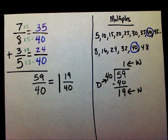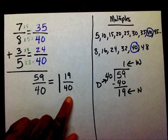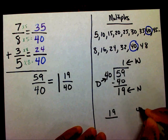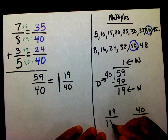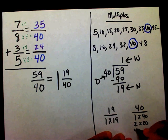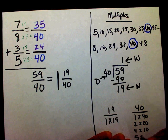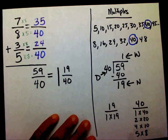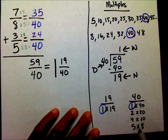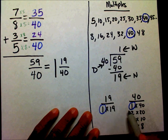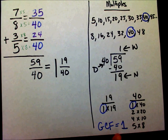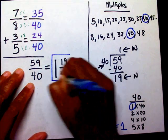Now I need to check and make sure this is in lowest terms. I want to find the factors of nineteen and forty. The factors for nineteen are one and nineteen. For forty, you have one and forty, two and twenty, four and ten, five and eight. The only factor they have in common is one, so my GCF is one. Since my GCF is one, I know that this is in its lowest form.